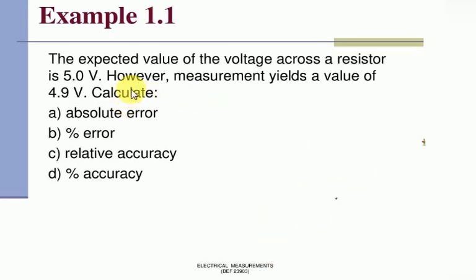That is a small example. In your first lecture, the example was very small. Example in the first chapter is small and not asked frequently, but let's do it. The expected value of the voltage across a resistor is 5.0 volts. However, measurement yields a value of 4.9 volts. We need to calculate absolute error, percentage error, relative accuracy, and percentage accuracy.